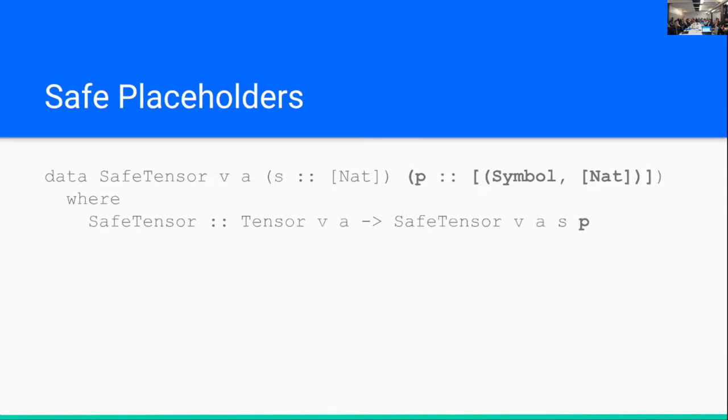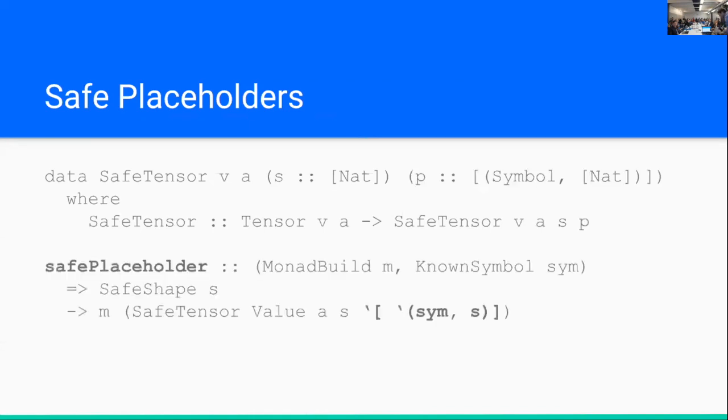So now let's take this idea one step further and also encode the placeholder dependencies of our tensor at the type level. And so this slide looks very strange. But really, every placeholder essentially has a name and has a shape. So we're also assigning a dictionary mapping the names of our placeholders to the shape that they take. And so now all of our tensors know what placeholder values they depend on.